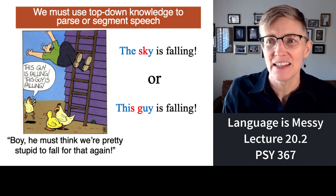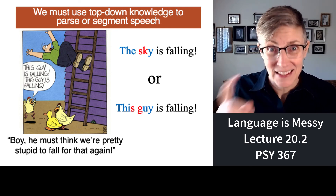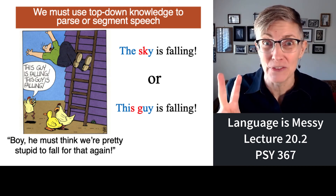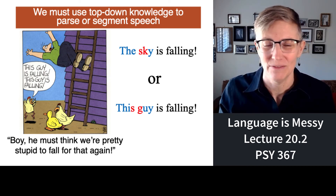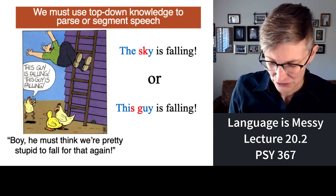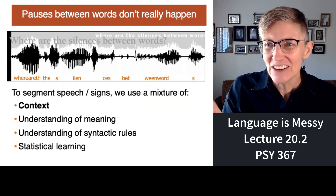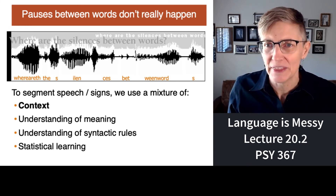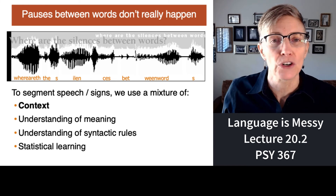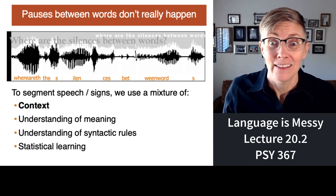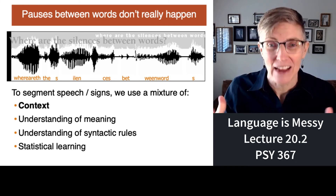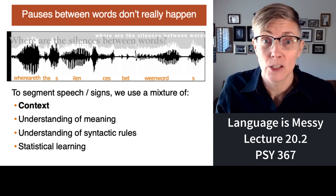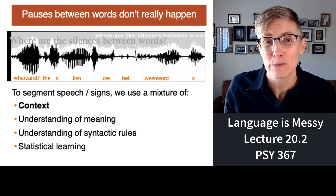We have to use top-down knowledge to interpret phonemes because they are ambiguous. For example, 'the sky is falling' versus 'the sky is falling' — two different sentences that sound identical. This is illustrated with a Gary Larson cartoon. Here is another graph of the energy from somebody's mouth when they say 'where are the silences between words?' — there aren't any. So we have to use context, meaning, the rules of language, experience, and statistical learning to make sense of things.